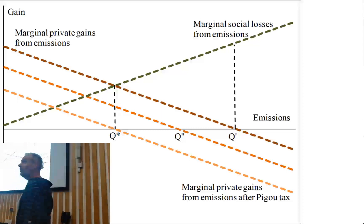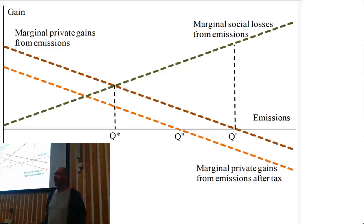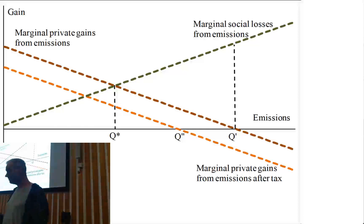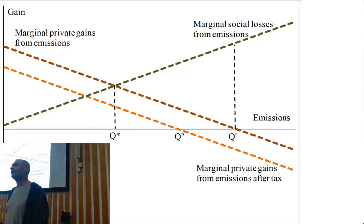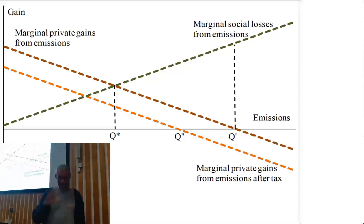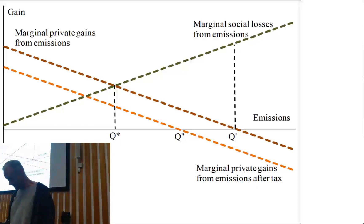Typically we don't know where the green curve is, so we impose a tax on emissions and move emissions in the right direction — we reduce them and hope it gets somewhere near the social optimum. But of course we do not know for sure, and sometimes not even approximately, where that green curve lies. That is an environmental tax, and that is really as simple as it is.